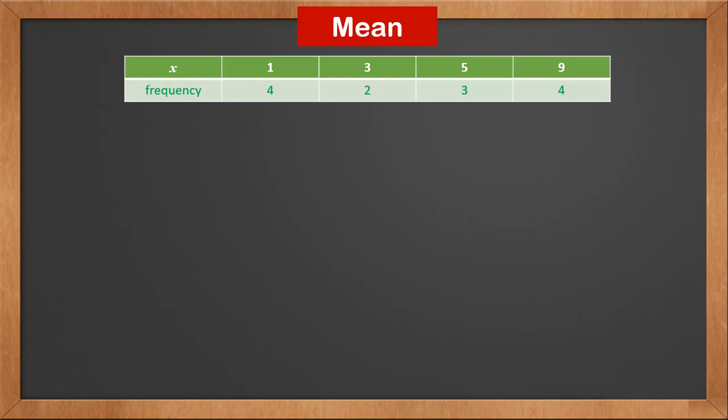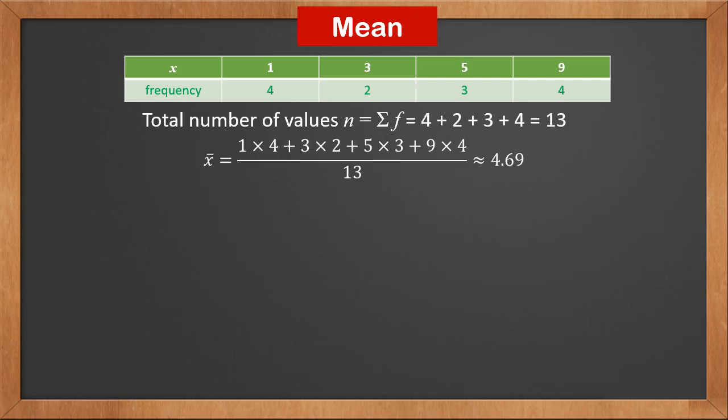The mean is the sum of all values divided by the number of values. We know the number of values is sigma f, which is 13. There are 4 ones, 2 threes, 3 fives, and 4 nines. So the sum of all values is 1 times 4, plus 3 times 2, plus 5 times 3, plus 9 times 4.